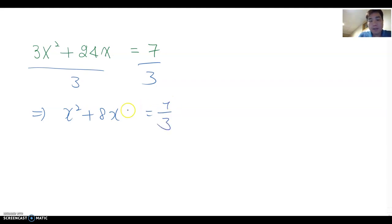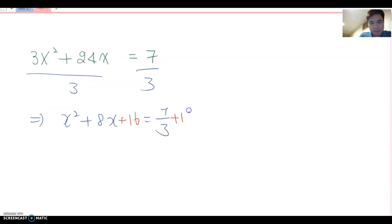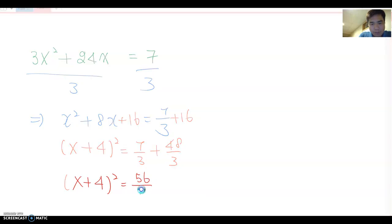Now, we combine half of a squared, which is 4 squared, which is 16. So 16 plus 16 here. If you factor this out, then it becomes x plus 4 squared. And you combine this fraction, then 7 over 3 plus 48 over 3. Therefore, x plus 4 squared equal to 56 over 3.